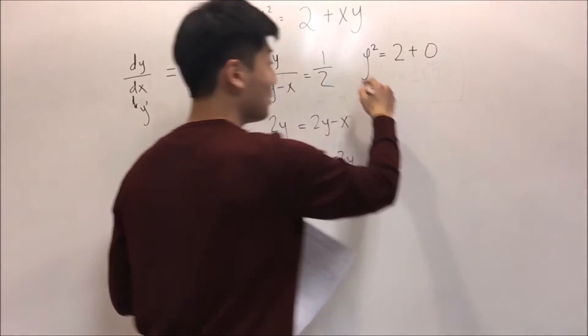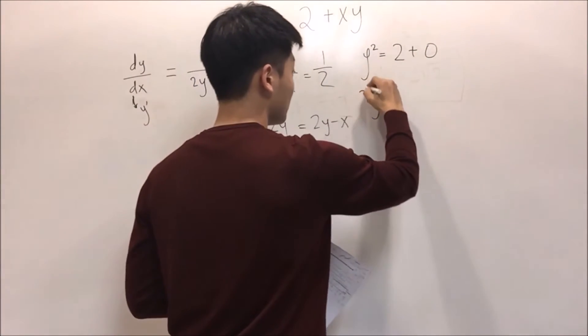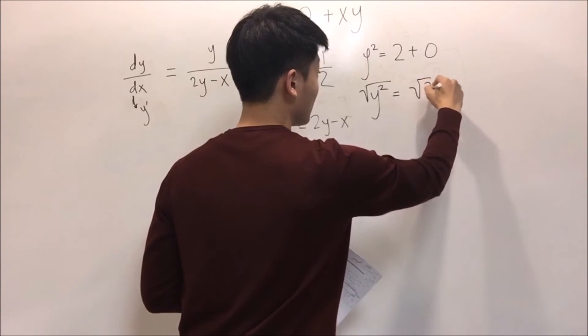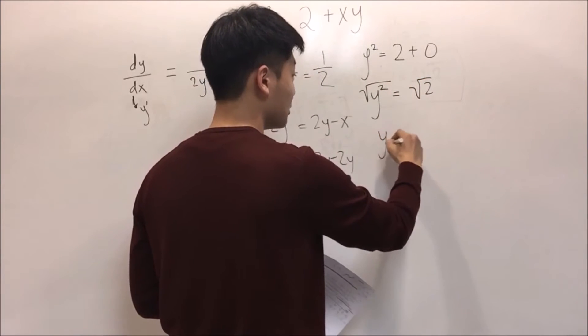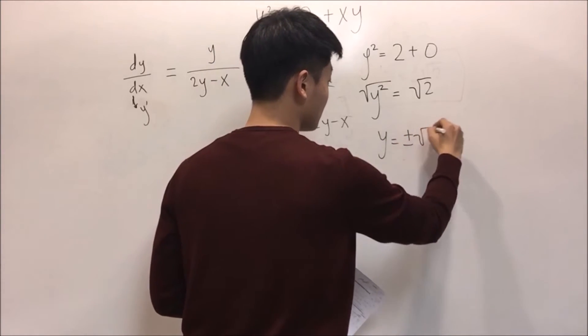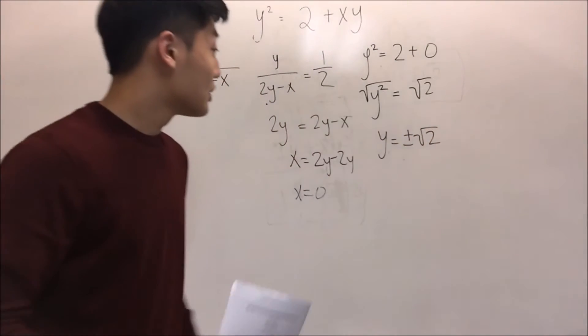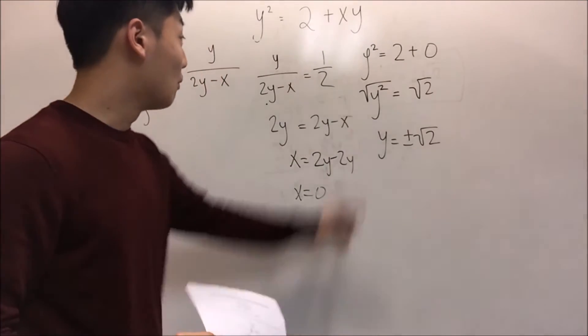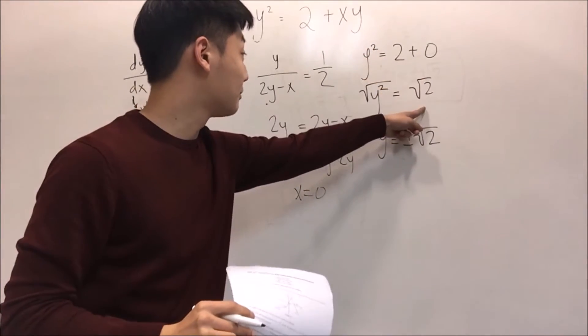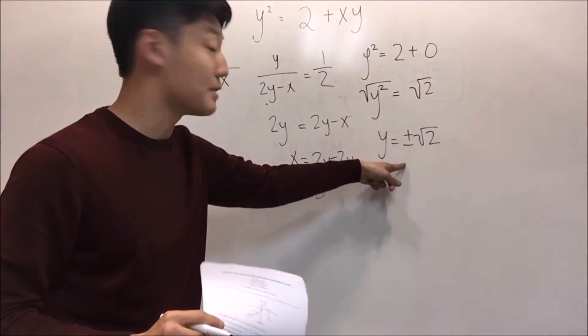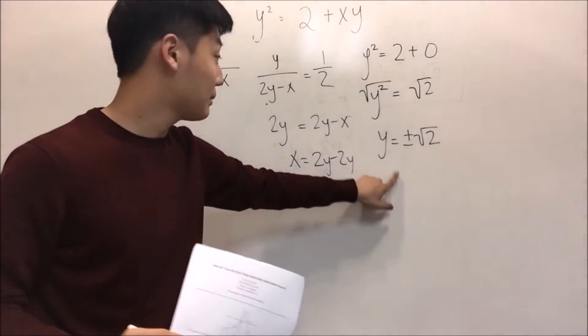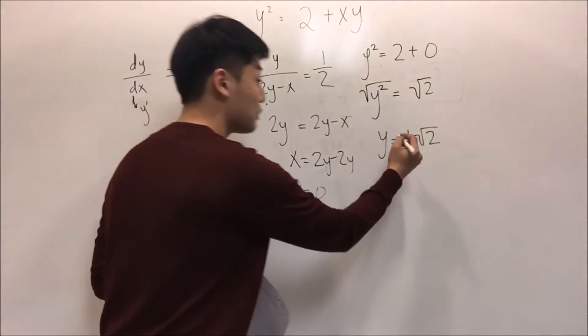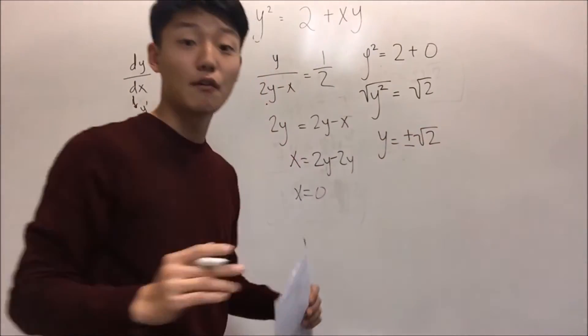That means when we square root this, this will become y equals plus or minus radical 2. One thing you have to be careful is when you are square rooting this, you have to put plus and minus because both work. Sometimes many people just put plus and get one point wrong. You always have to put plus and minus for both.